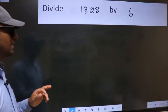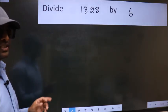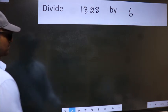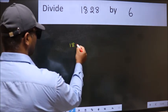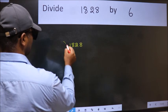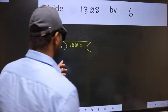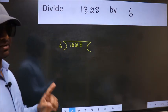Divide 1828 by 6. To do this division, we should frame it in this way. 1828 here, 6 here. This is your step 1.